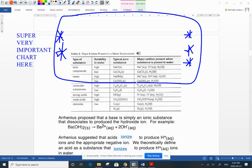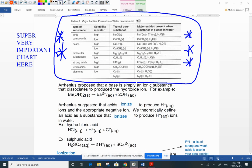So this chart is a super very important chart that goes through and helps you to decide how am I going to treat a compound. If it is an ionic compound, then I'm going to have to look up on my solubility chart.